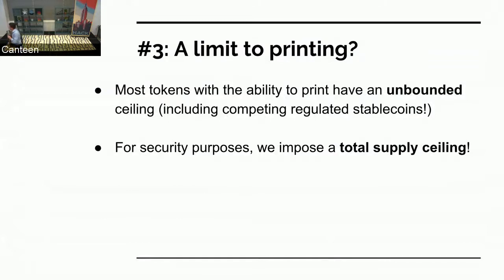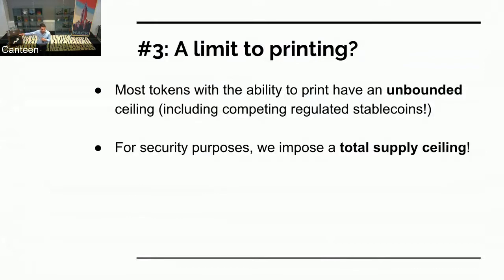A limit to printing: most tokens have the ability to print an unbounded amount — just a print function. We impose something called a total supply ceiling for security purposes. If our hot wallet, God forbid, got compromised, there's a limit to what could actually happen with respect to Gemini dollars. It can't just print billions willy-nilly. There's a ceiling, and adjusting that ceiling requires multiple signatures from our cold and cryogenic, geographically separated offline sites.